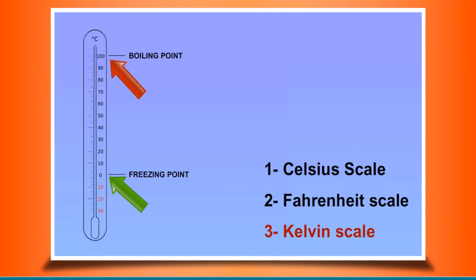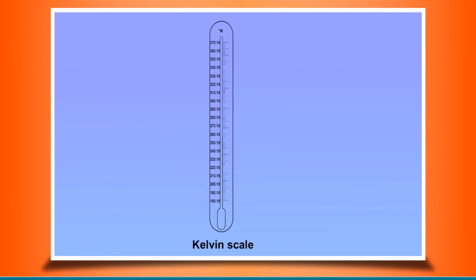Kelvin scale is most commonly used in scientific calculations. In this scale, freezing point of water is 273.15 K and boiling point is 373.15 K. Between the two temperatures, there are 100 equal divisions. Thus, one division in Celsius scale is equal to one division in Kelvin scale.